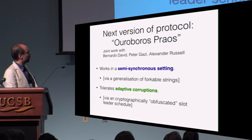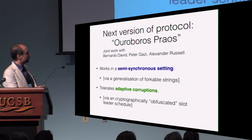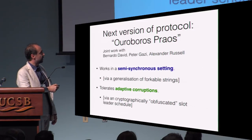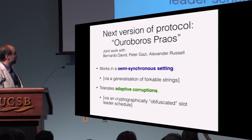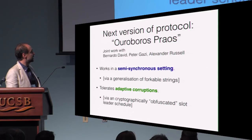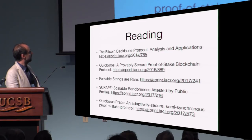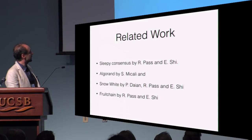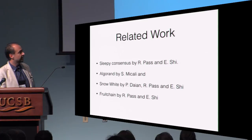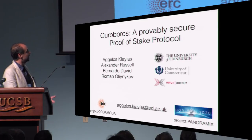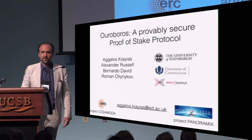Two open questions left in this work — the semi-synchronous setting with partial synchrony and adaptive corruption — are dealt with in upcoming work with Bernardo David, Peter Gassin, and Alex Russell, available on ePrint. Further work and related comparisons can be found in the ePrint version and proceedings. Thank you very much for your attention.